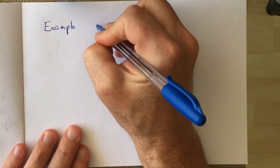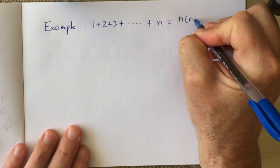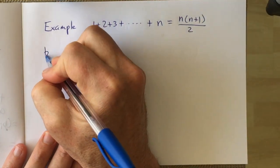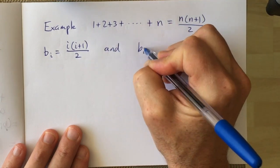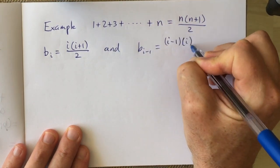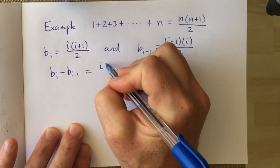So how do we apply this in the two examples that we have? So we take the sum of the first n integers. If bn is n times n plus 1 over 2, then bi is i times i plus 1 over 2, and bi minus 1 is i minus 1 times i over 2.